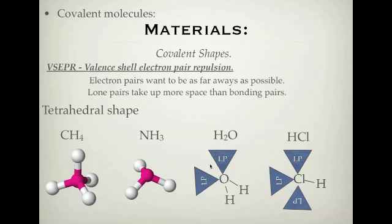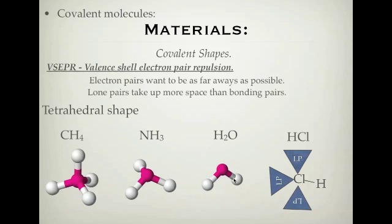If you have two lone pairs of electrons, like in the water molecule — oxygen in the middle, two hydrogens, and two lone pairs — these lone pairs take up more space and push the hydrogens closer together. So it ends up looking like a V, or an upside-down V. This is known as a V shape or bent shape.